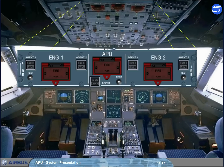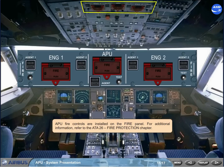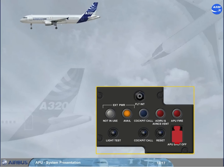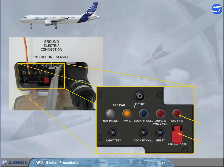APU fire controls are installed on the fire panel. For additional information, refer to the ATA 26 fire protection chapter. There is also an APU shut off push button and an associated APU fire warning light located on the external power panel — also refer to ATA 26. This panel is located in front of the nose gear bay.